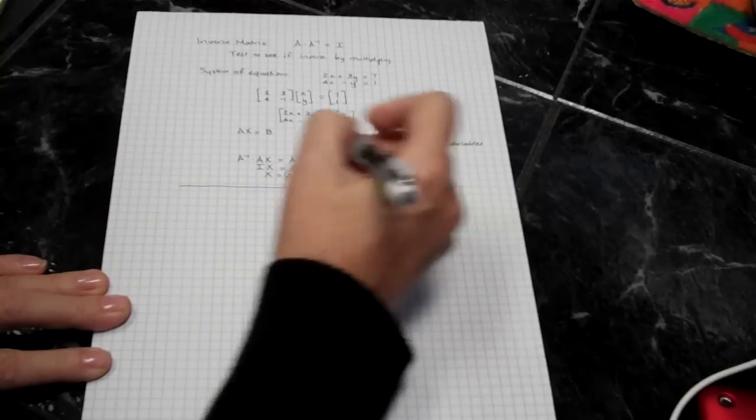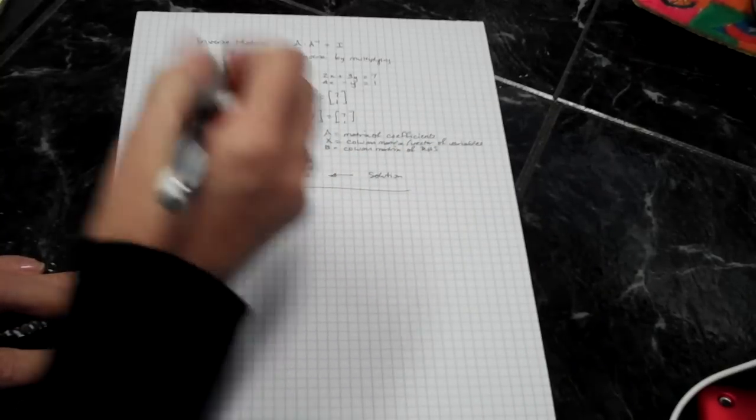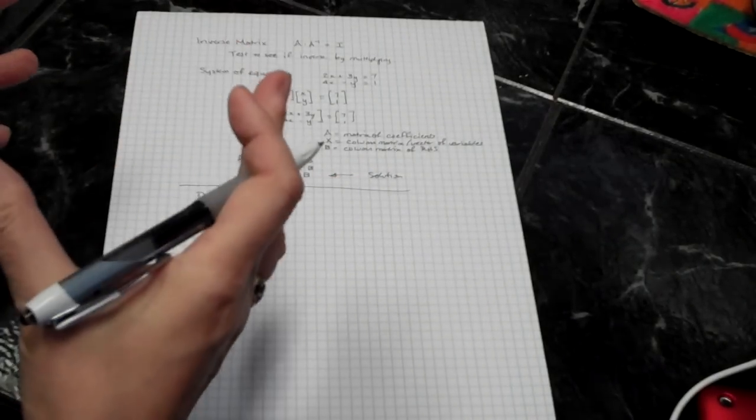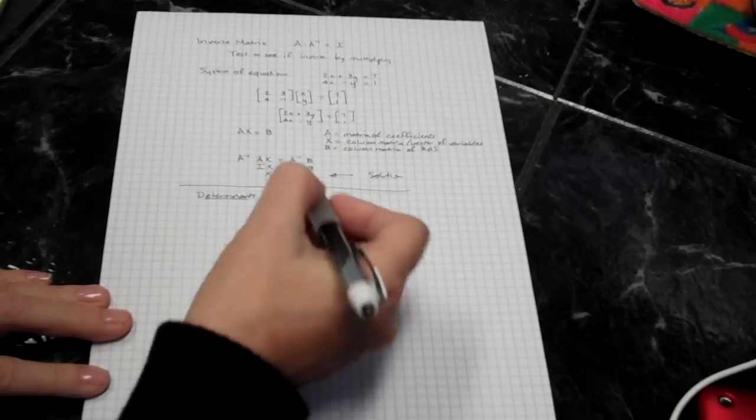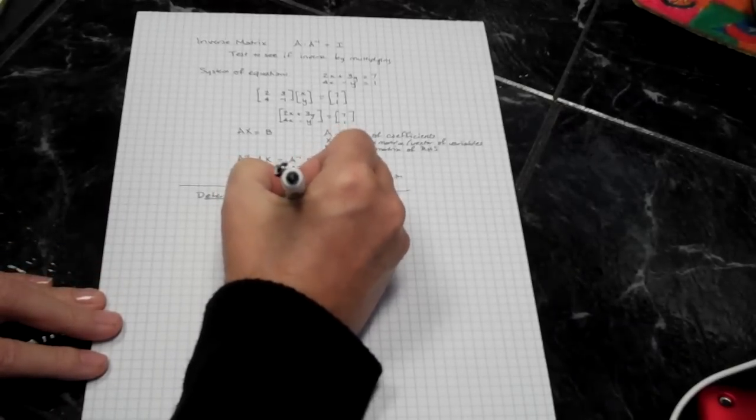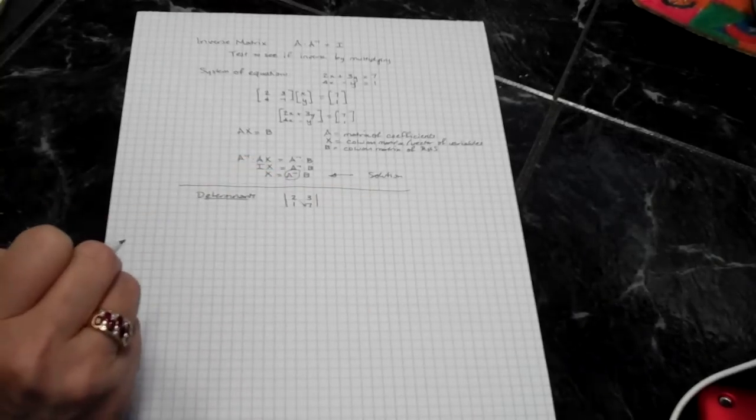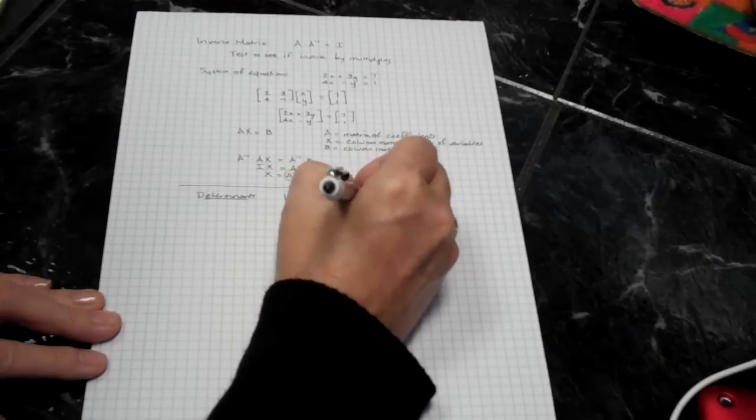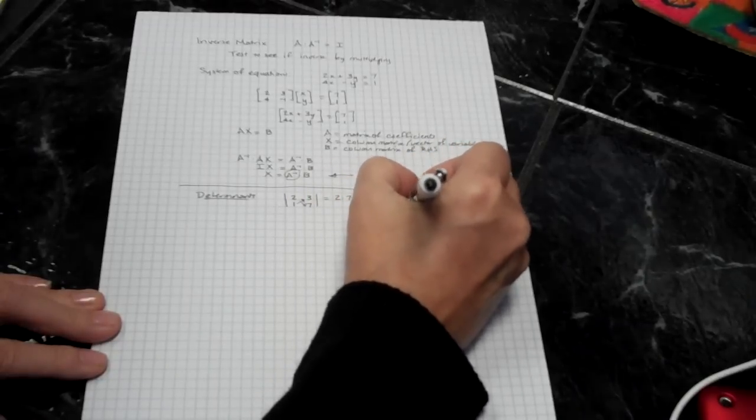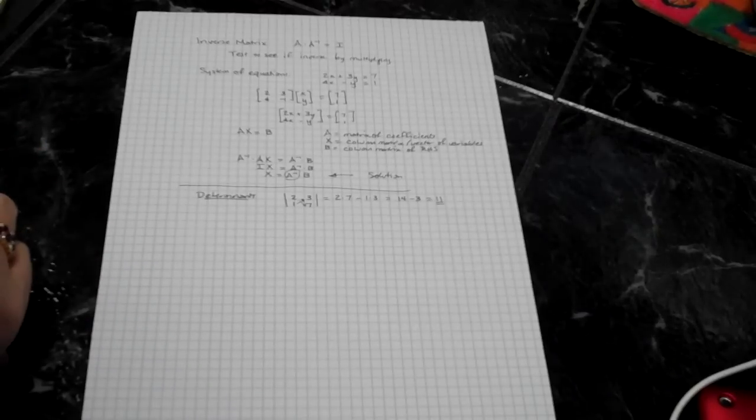Now there's one other thing that we want to learn to do, and that is determinants. A determinant is a unique number that describes the size, magnitude of a matrix. Not size like so many rows by columns, but how big the numbers are. And for a little determinant like this, what you do is you take these guys and multiply them together, and you subtract those guys. So 14 minus 3 is 11. And that would be the determinant of this little matrix array that I have here.